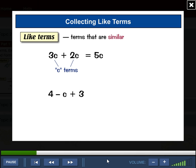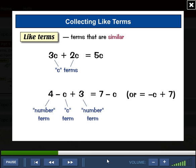Say you've got 4 minus c plus 3. You've got a number term, a c term, and a number term. So 4 and 3 are like terms. You can add them together to give 7. So you can write the expression as 7 minus c, or you could write it as minus c plus 7. Either's fine.